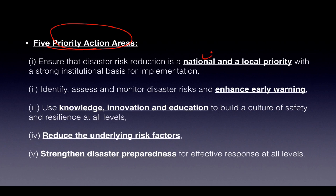The Hyogo Framework has five priority action areas: make disaster risk reduction a national and local priority; enhance early warning systems; build knowledge, innovation, and education for a culture of safety; reduce underlying risk factors; and strengthen disaster preparedness for effective response.